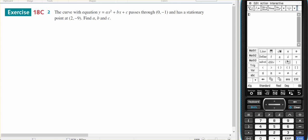This is a calculus methods problem from Exercise 18C, question number 2. The curve with equation y equals ax squared plus bx plus c has three unknowns. It passes through a point and has a stationary point at (2, -9). Find a, find b, find c.